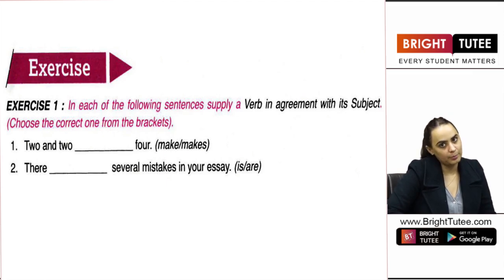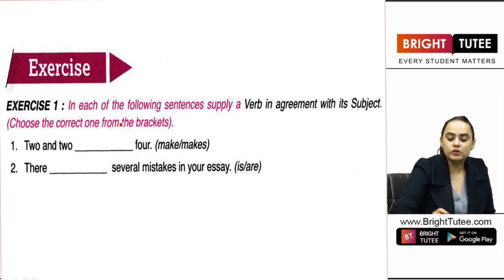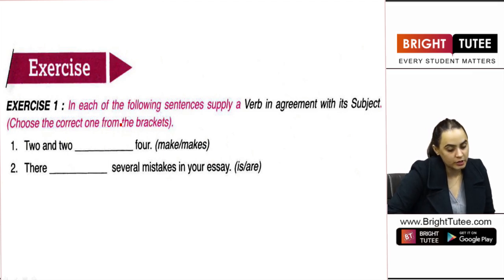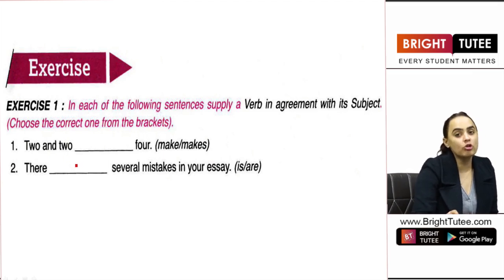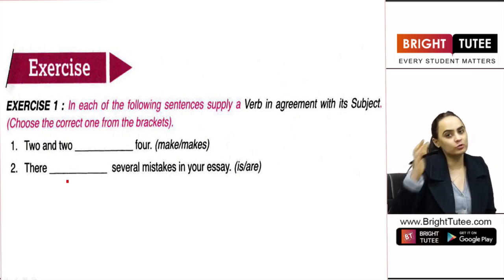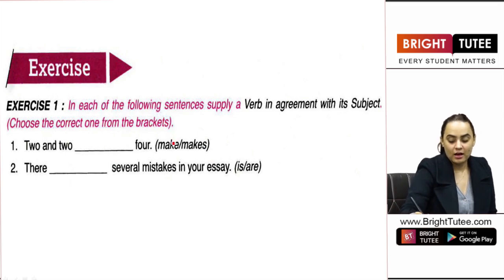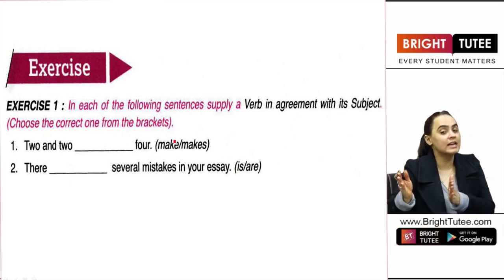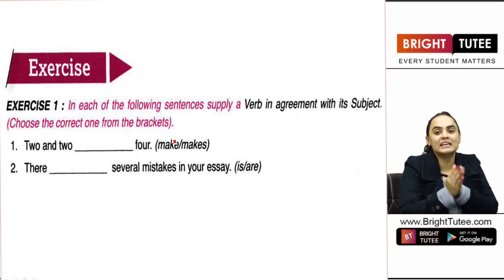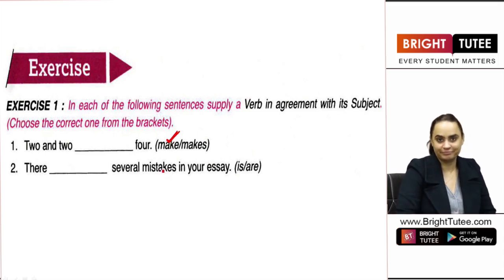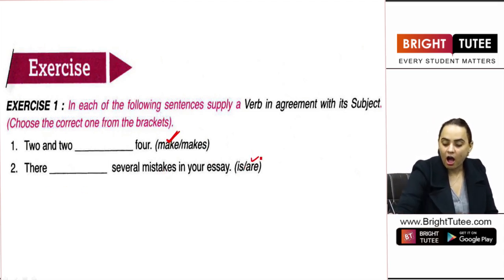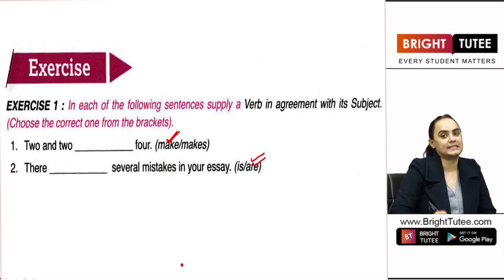Let us solve a couple of exercises to recap what we have done. In each of the following sentences, supply a verb in agreement with its subject — choose the correct one from the bracket. So 'two and two' — these are two singular nouns but are always taken as a whole, so 'two and two make four.' There are several mistakes in your essay.